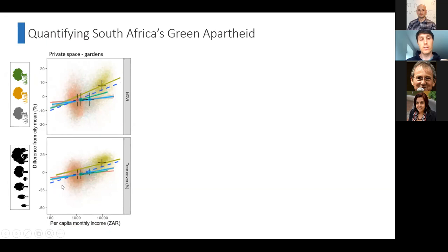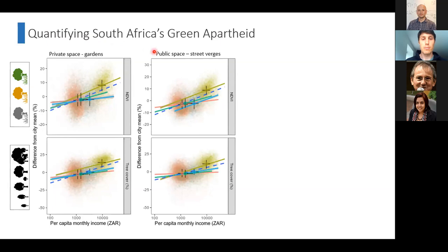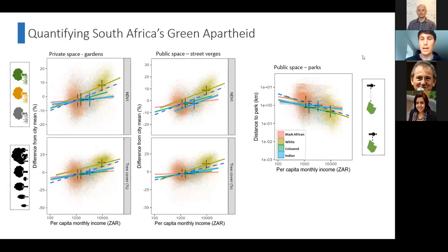That was in private space. Looking at public space — street verges — we see the very same pattern: as income increases, urban greenery of the census tract increases as well. For parks, the y-axis is distance to park in kilometers on a log scale, and we can see that as income increases, people on average live in closer proximity to a park.